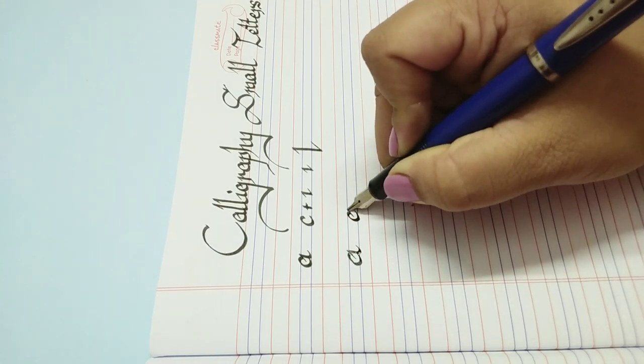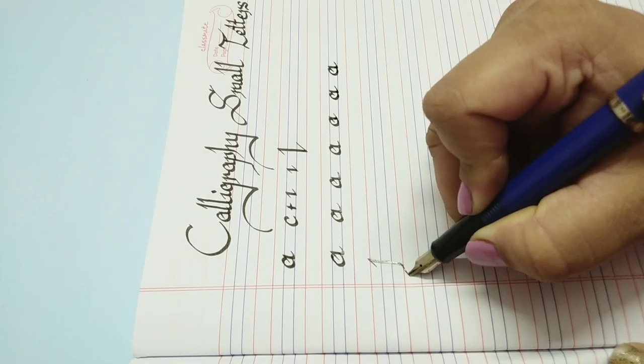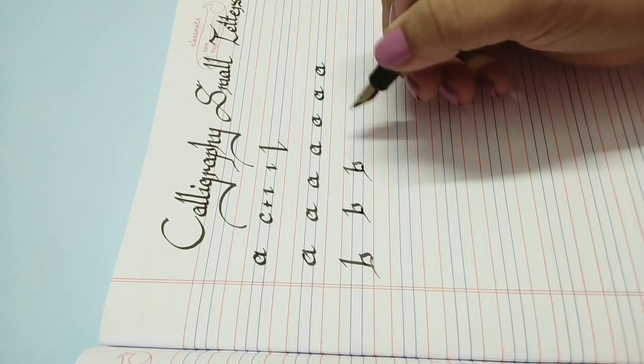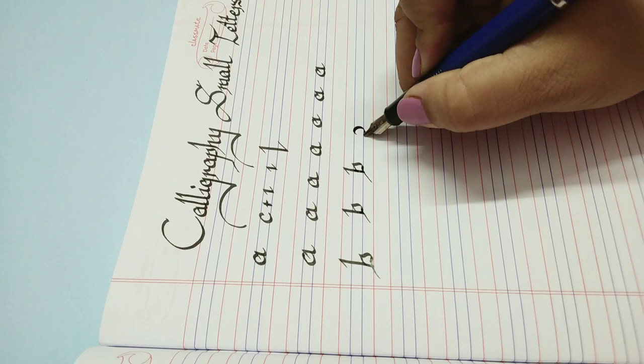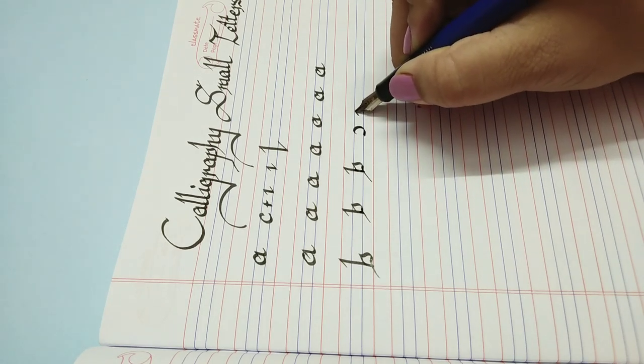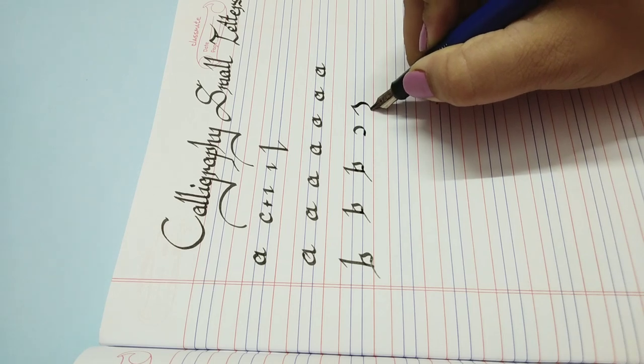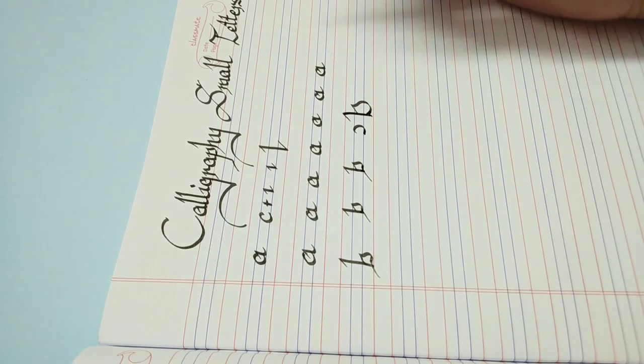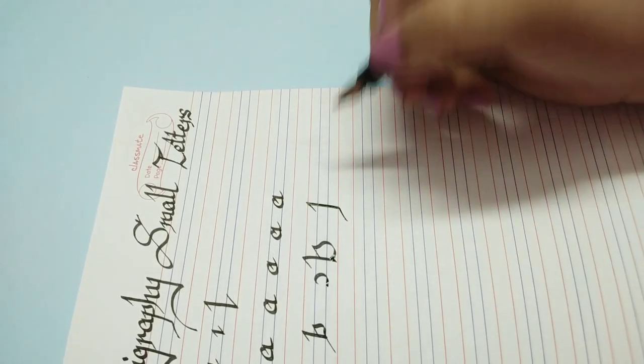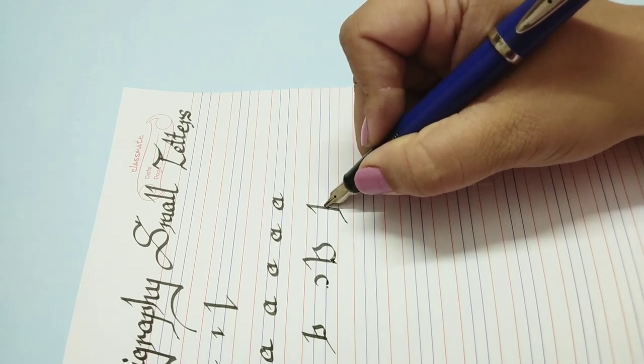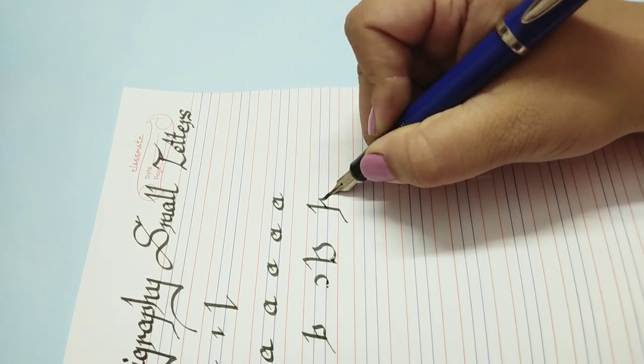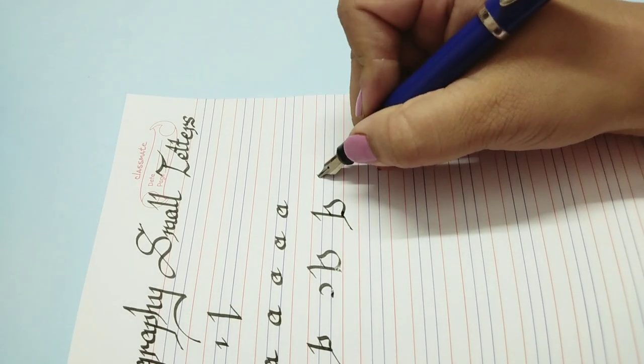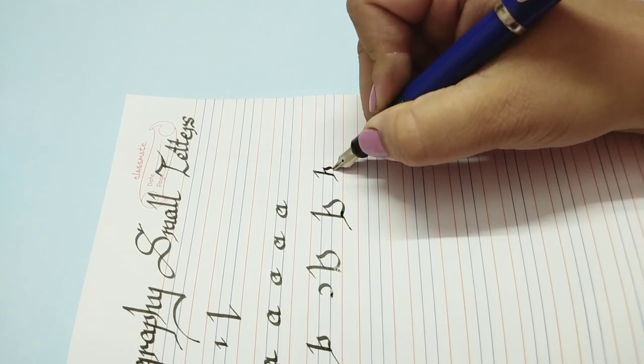We need to practice this as much as we can. For the 'b', the curve goes down, goes up and goes like this, then it goes down. First we make our standing line, and then for the bigger version you have to go this way and this way. So when we make this smaller, it is this way.